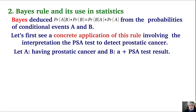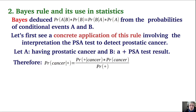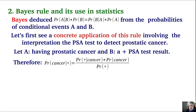Let A be the condition of prostate cancer and B be a positive PSA test result. Substituting into the Bayes equation, what we want to know on the left-hand side is the probability of having cancer given a positive test — we already received the test — which equals the probability of a positive test given cancer times the probability of cancer.